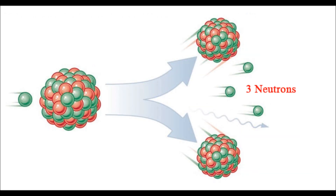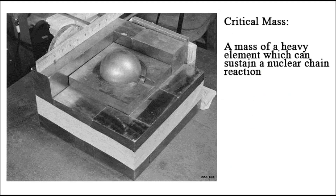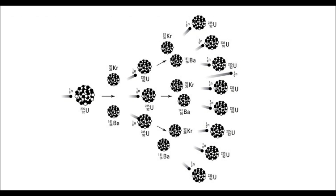Two or three neutrons from the heavy atom were knocked away. If there is a critical mass of uranium, or any other heavy element, which means a mass that can sustain a nuclear chain reaction, the neutrons knocked away from the initial heavy atom will hit other atoms. Those other atoms will fission too, and that will start the nuclear chain reaction.